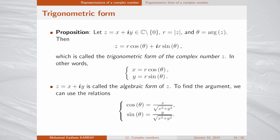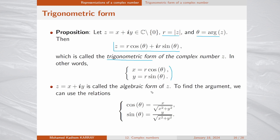The following proposition summarizes these results. Let z = x + iy with modulus r and argument θ. Then z equals r·cos θ + i·r·sin θ, which is called the trigonometric form of z. The real part equals r·cos θ and the imaginary part equals r·sin θ. The form z = x + iy is called the algebraic form of z.